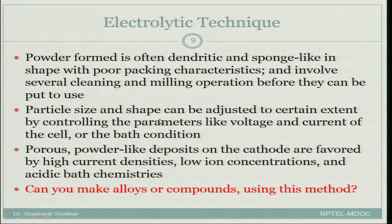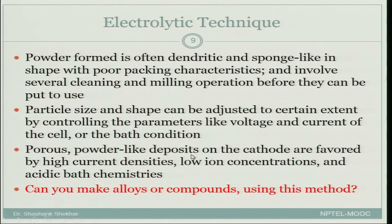Particle size and shape can be adjusted to a certain extent by controlling the parameters. You can change the voltage and current to adjust the shape and size of the powder particulates. Porous powder-like deposits on the cathode are favored by high current densities, low ion concentrations, and acidic bath chemistries.